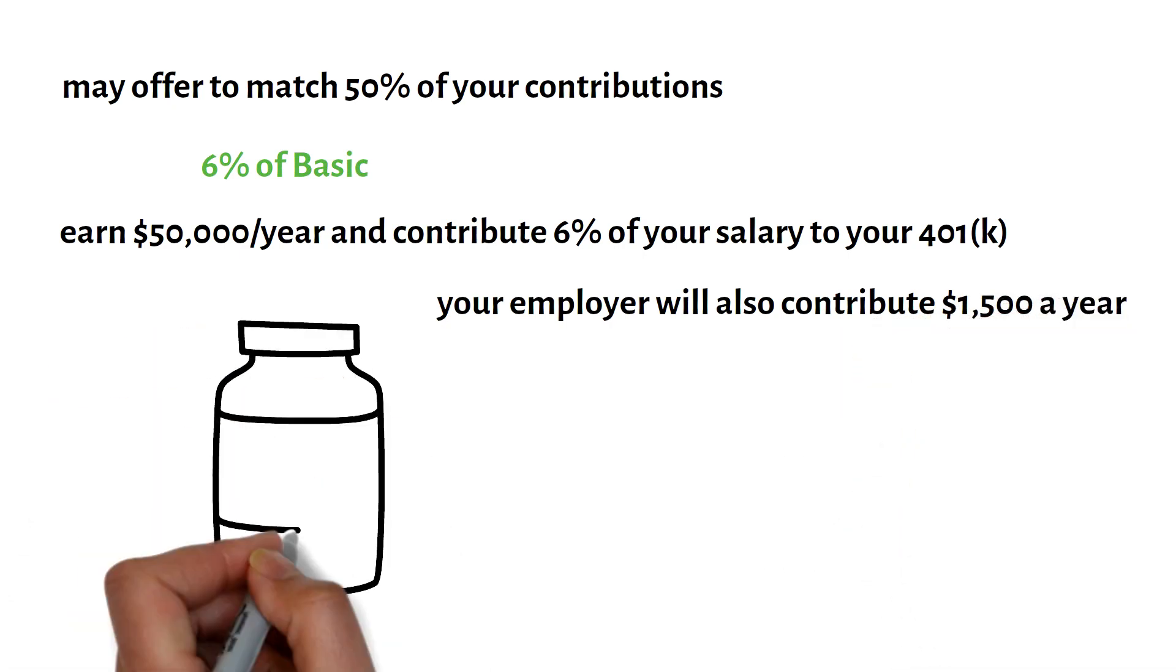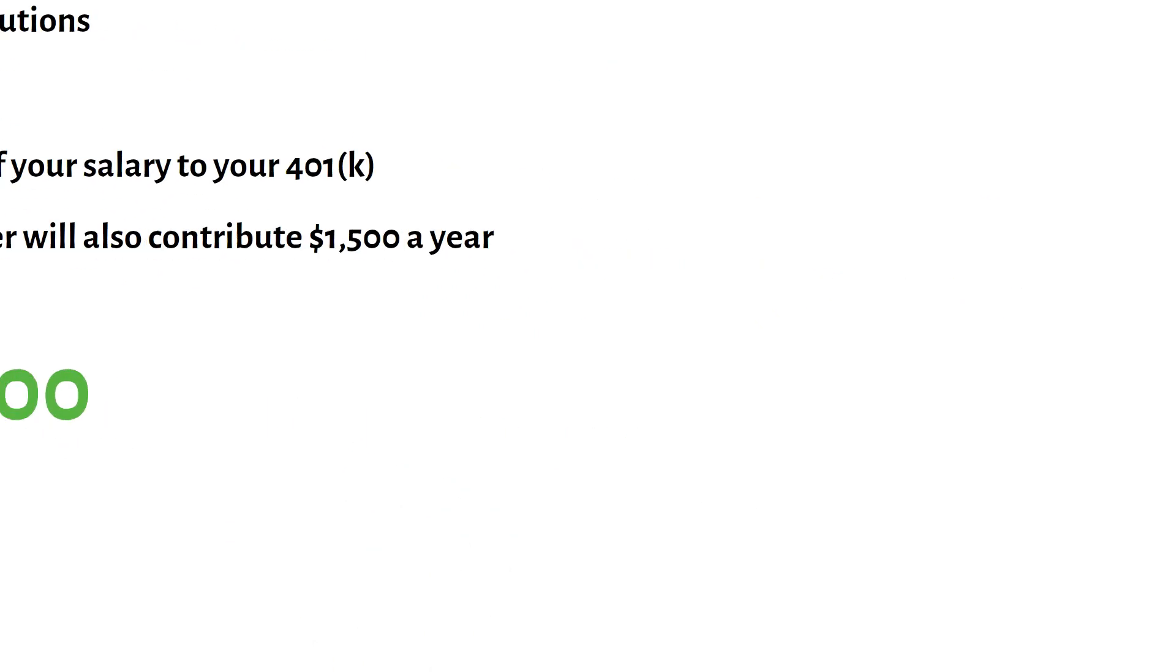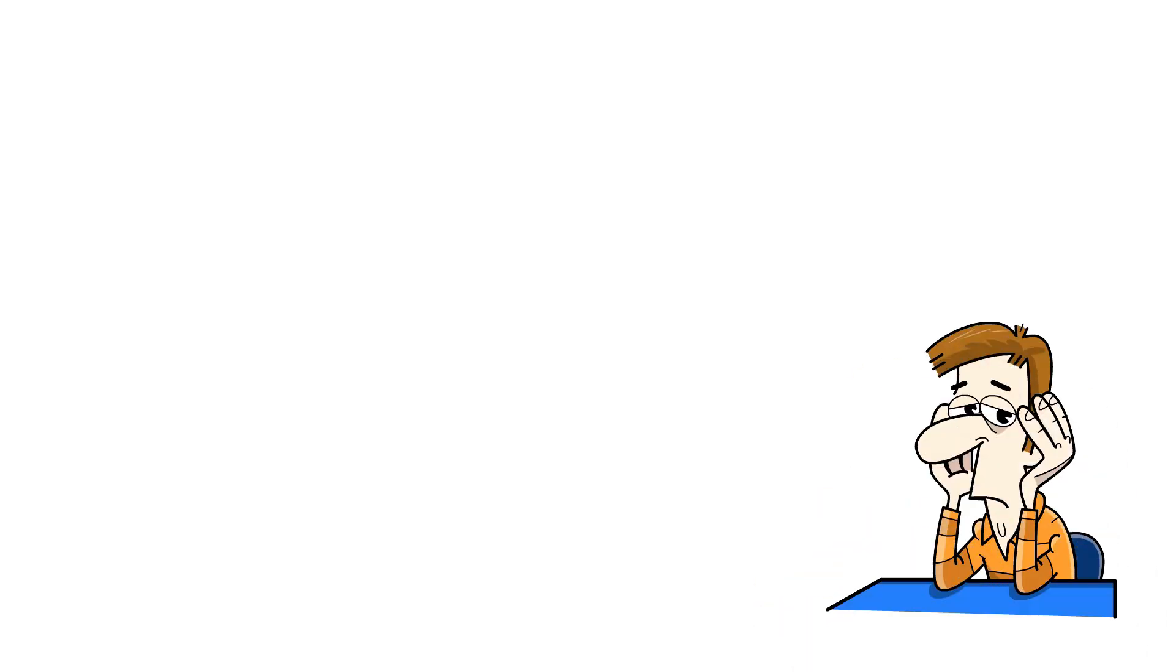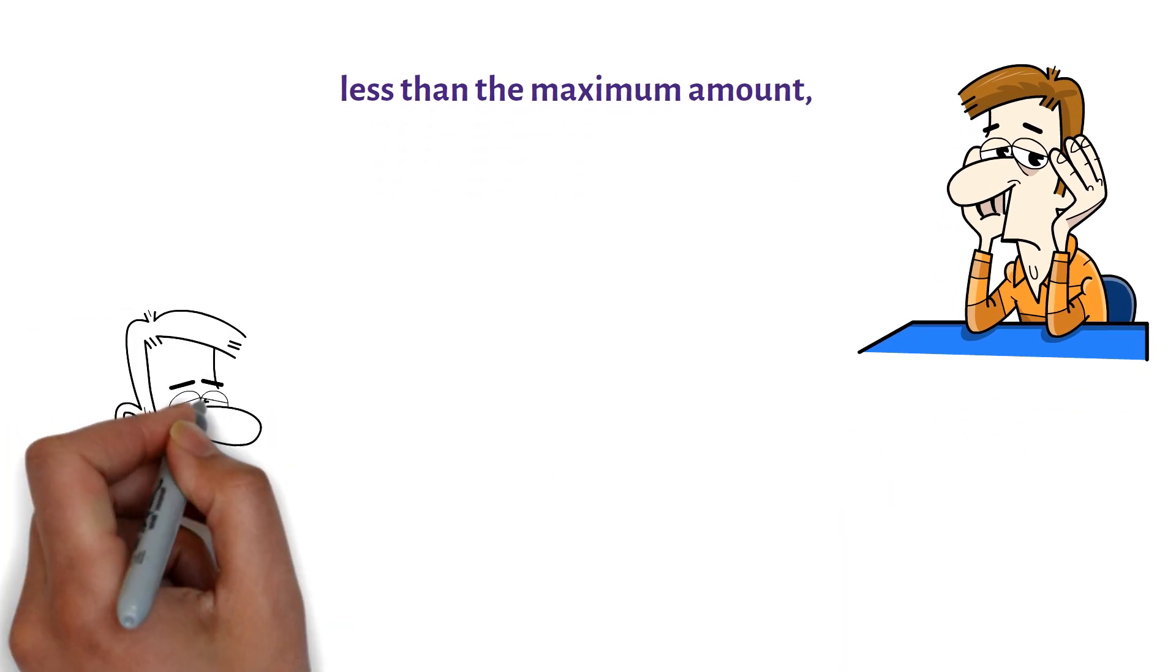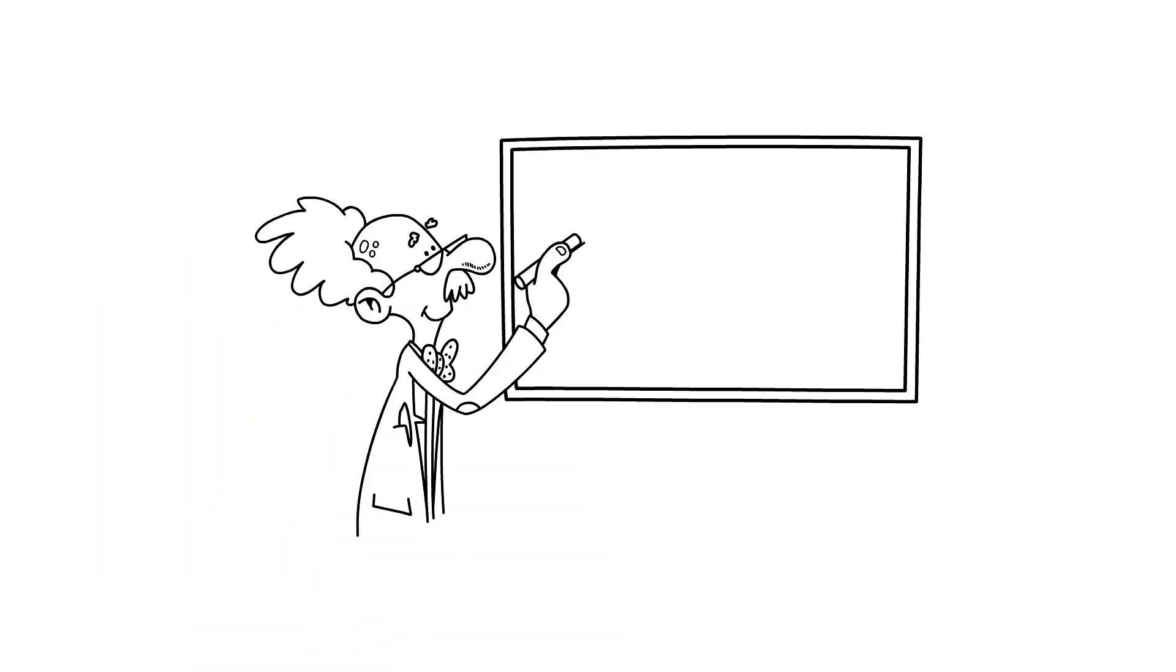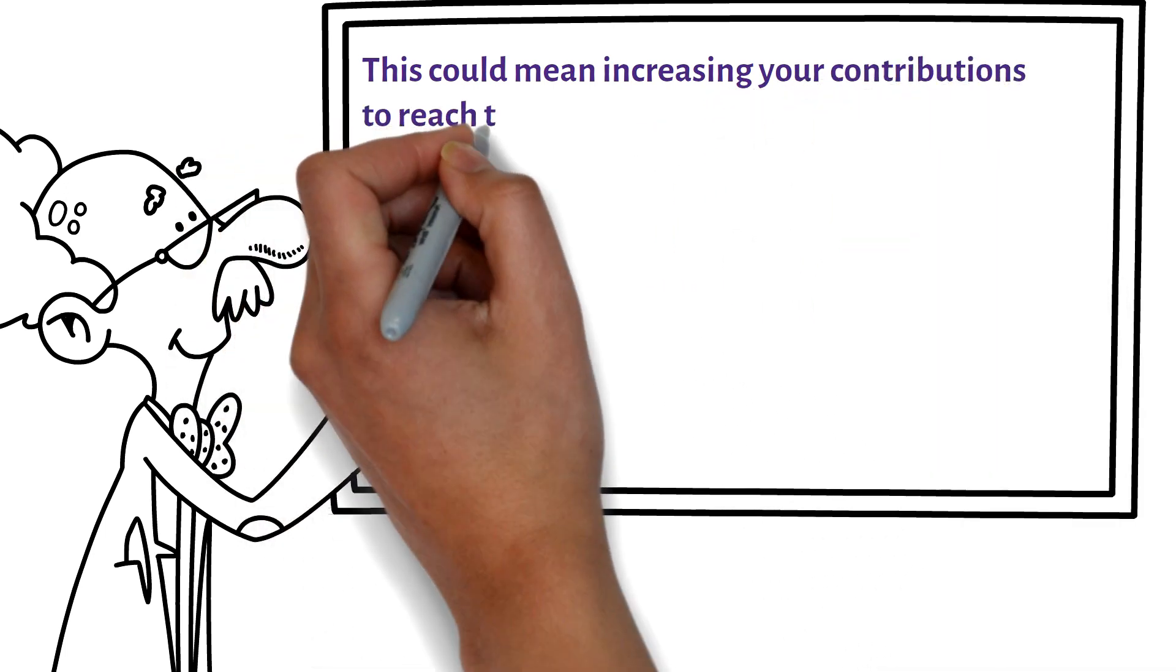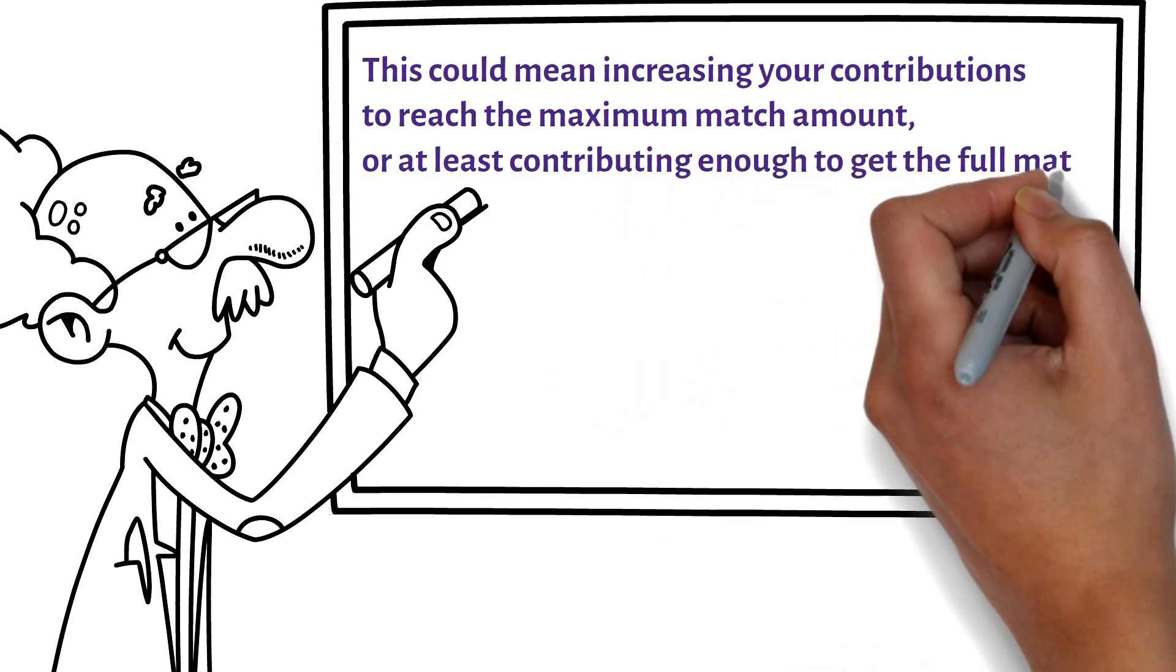That's an extra $1,500 in free money for your retirement savings. Unfortunately, many people don't take full advantage of their employer match. They may contribute less than the maximum amount, or they may not contribute at all. This means that they're leaving free money on the table, money that could be growing in their retirement savings account for years to come. If your employer offers a 401k match, make sure you are contributing enough to take full advantage of it. This could mean increasing your contributions to reach the maximum match amount, or at least contributing enough to get the full match.